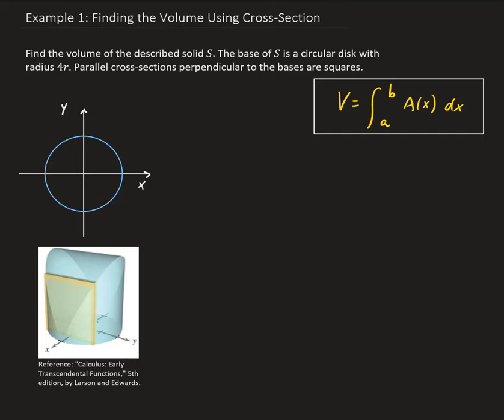In this example, we want to find the volume of the described solid S. The base of S is a circular disk with radius of 4r. Parallel cross sections perpendicular to the base are squares.